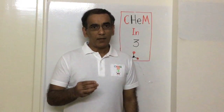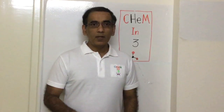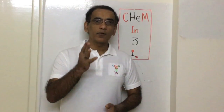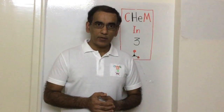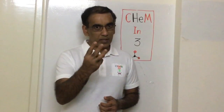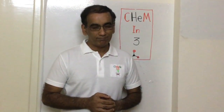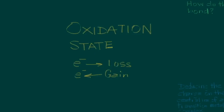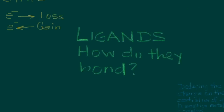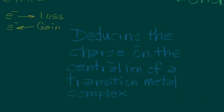Hello and welcome to ChemIn3, the series where we spend no more than 333 seconds to consider three important points for the IV chemistry exam. Today on ChemIn3: oxidation state, and how ligands bond to the central metal ion in a transition metal complex, and then we use this in deducing the charge on the central ion of a transition metal complex.